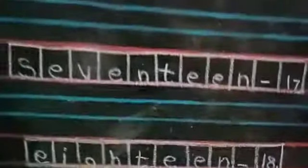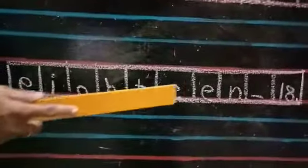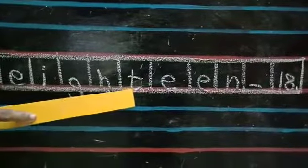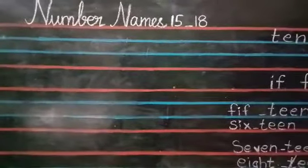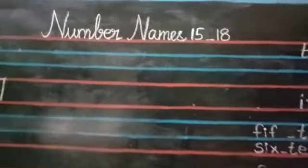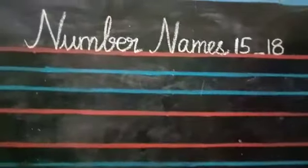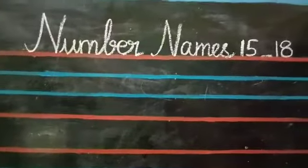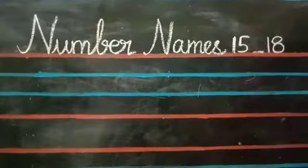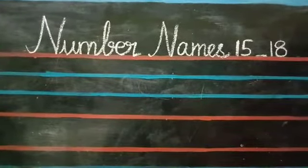Children, all should remember — while writing 18 spelling, there should be only one T. Hope all of you understood the number names 15 to 18. Now open your number work notebook and write the number names 15 to 18 correctly. Thank you, children.